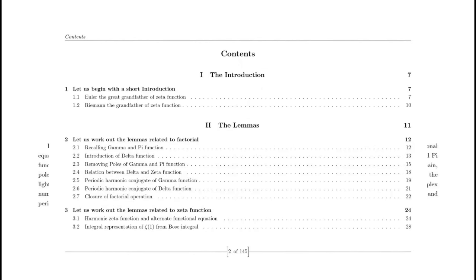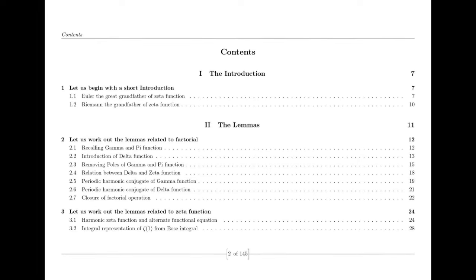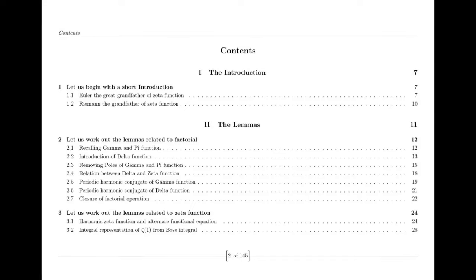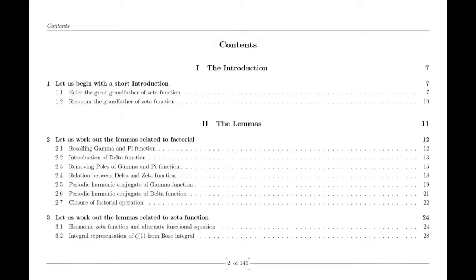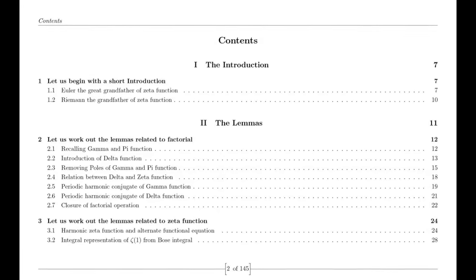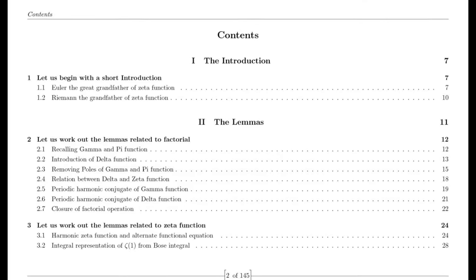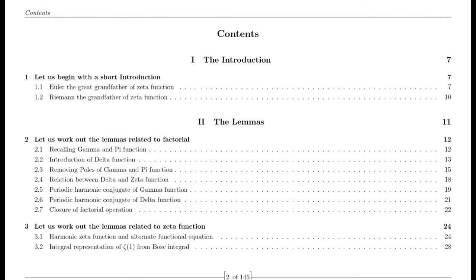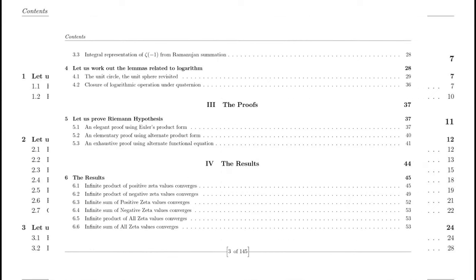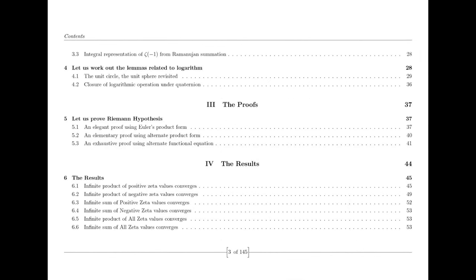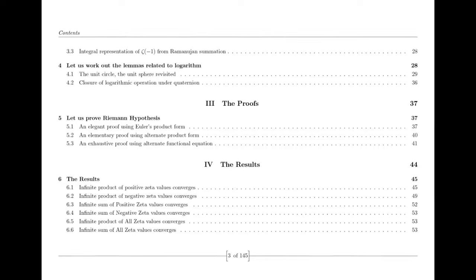To appreciate the integration of complex numbers with the decimal system, we must first understand their origins. The decimal number system, also known as the base-10 system, dates back to ancient civilizations like the Egyptians and the Babylonians. It was formalized by Indian mathematicians and spread to the Western world through the works of Islamic scholars. Complex numbers have a more tumultuous history; the notion of imaginary numbers emerged in the 16th century when mathematicians like Cardano grappled with solutions to cubic equations involving the square root of negative numbers.